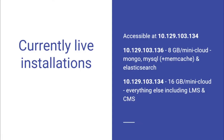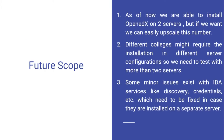Currently the distributed installation across two servers is live on two IPs. For future scope, since we have distributed across two servers, it can be easily scaled up to more servers. We need to test it for more than two servers with different colleges, and there may be some problems with services like discovery and credentials which need to be fixed when they are installed on separate servers.